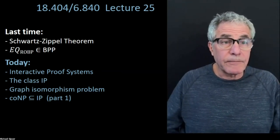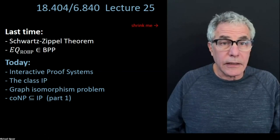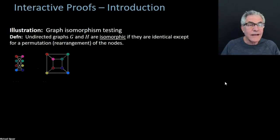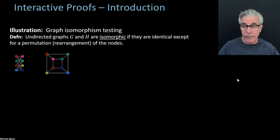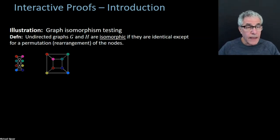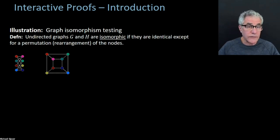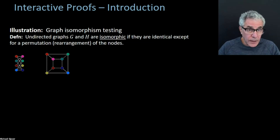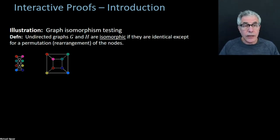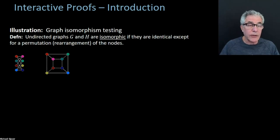So with that, why don't we jump in and start with an introduction. I'm going to introduce the model or the concept of an interactive proof with an example. That example involves the graph isomorphism problem — that's the problem of testing whether two graphs are isomorphic. What we mean by two graphs being isomorphic is that they're really just the same graph, with one of them perhaps being relabeled or permuted, so that they may look superficially different.